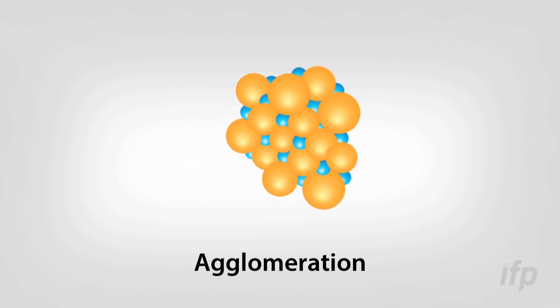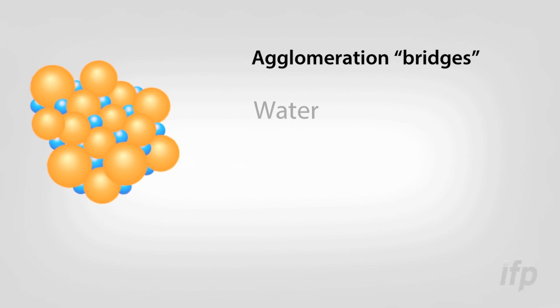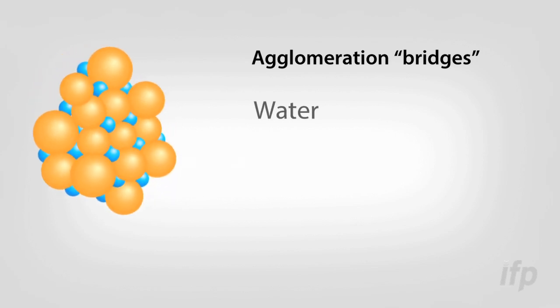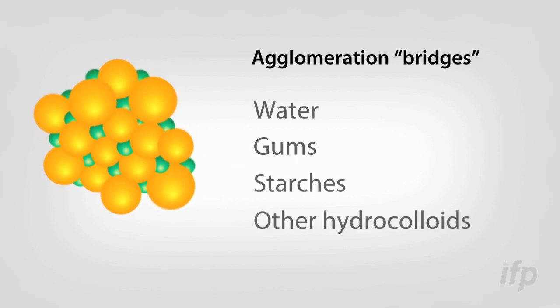Those bridges get really interesting when you start thinking what are those bridges composed of. We can agglomerate with water, for instance, or we can add modifiers to that water such as gums, starches, or other hydrocolloids.